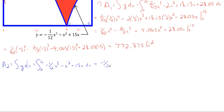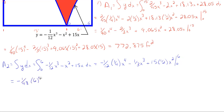Again, easy integration — integrate each term separately. We get: minus 1/12 times 1/4 x to the fourth, minus 1/3 x cubed, plus 15 times 1/2 x squared, from zero to six. Simplifying and plugging in six: minus 1/48 times six to the fourth, minus 1/3 times six to the third, plus 7.5 times six squared. We don't need the zero bound since every term has an x. This gives us 171 square feet, which makes sense as it's a much smaller area than the first curve.